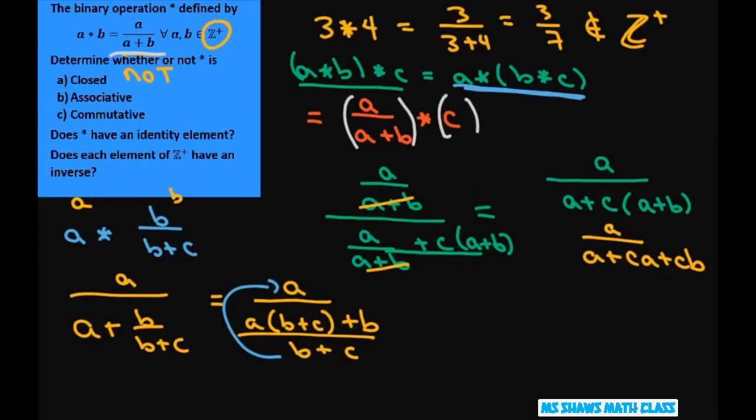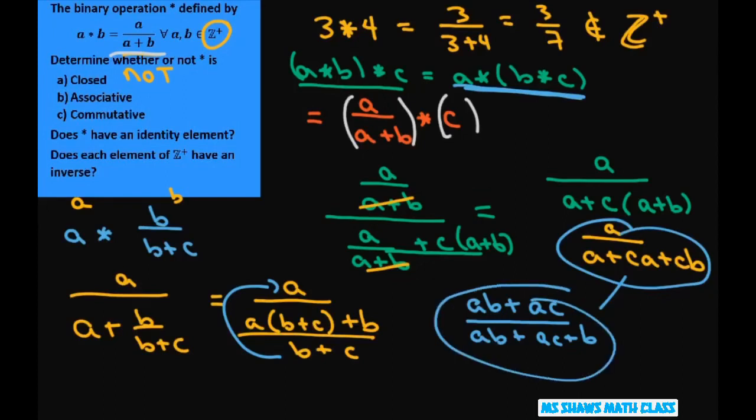So simplifying that, that's a divided by a times b plus c plus b all over b plus c. So that we can multiply these two together. So you get a, b plus a, c divided by, and I'm going to distribute all this out, a, b plus a, c plus b. These two do not equal, so it's not associative. So basically, you could have just said that since it's not closed, then it can't be associative.